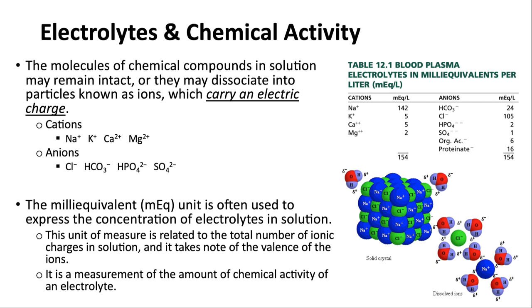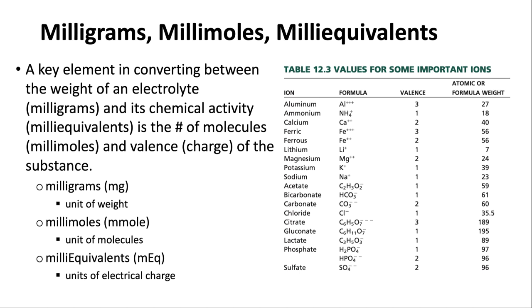Therefore, we take electrical charges as the measure of the chemical activity of the electrolyte. The key point is: you can count molecules, but the same number of molecules don't produce the same amount of electrical charge, and therefore don't have the same degree of chemical activity. We count milliequivalents as the unit to determine this level of chemical activity.